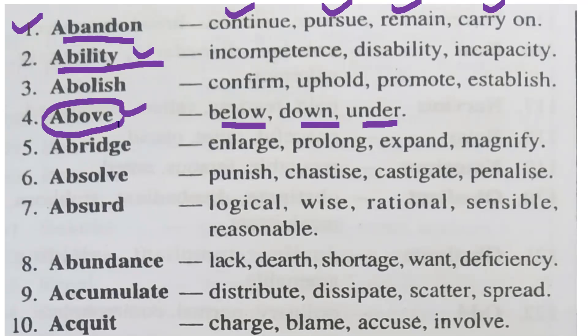Number four — above. You have to make a tick on 'under' as the antonym of above. Number five — average. The antonym of average is: enlarged, prolonged, expand, magnify.